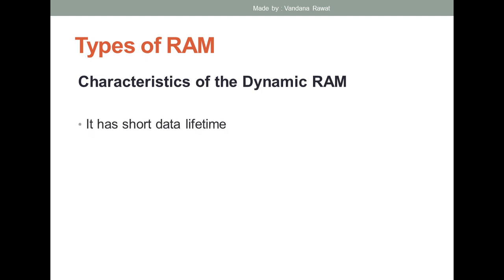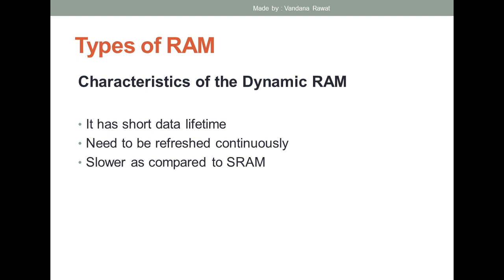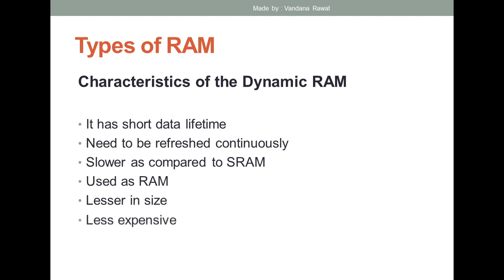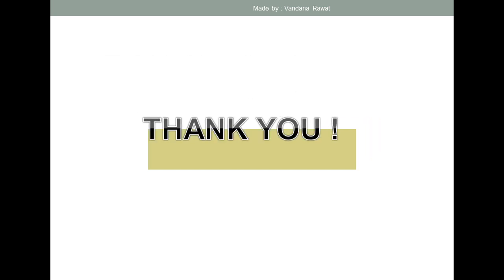The characteristics of DRAM are: it has a short data lifetime, it needs to be refreshed continuously, it is slower compared to SRAM, it is used as main RAM, it is smaller in size, less expensive, and the power consumption is less compared to SRAM. These are all the characteristics of dynamic RAM. I hope you have understood the types of RAM — that is SRAM and DRAM — and the differences between them. Thank you everyone.